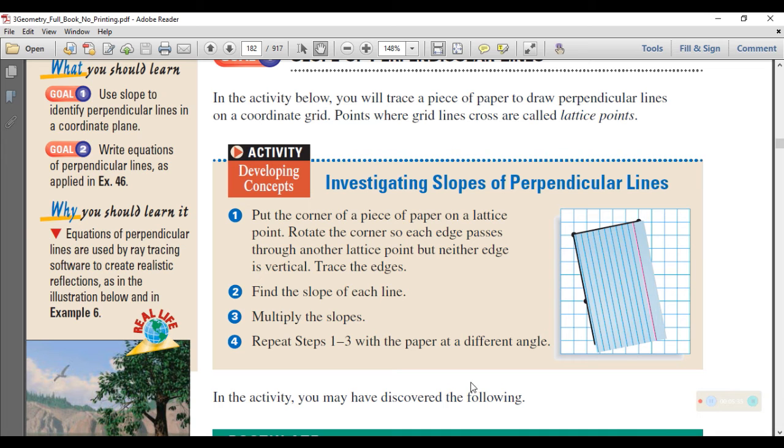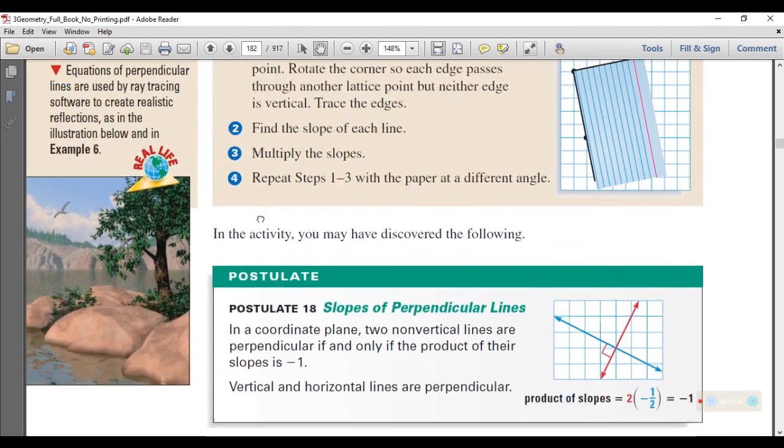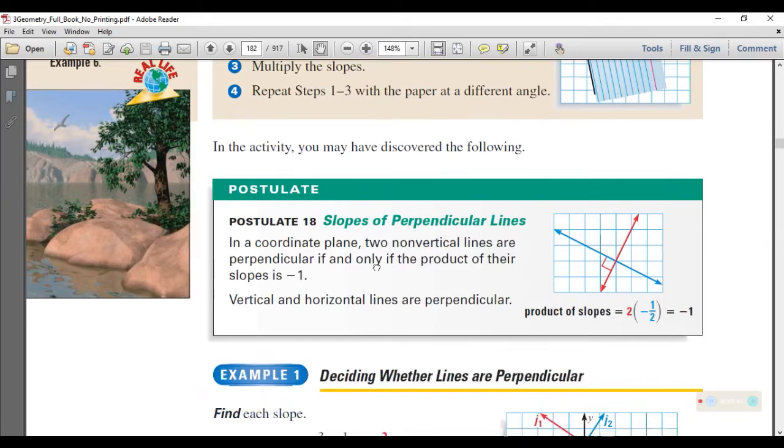So what is the importance of this value, negative 1? What you will eventually discover in the activity is that the slope of perpendicular lines, when multiplied, will give you negative 1. In a coordinate plane, two non-vertical lines are perpendicular if and only if the product of their slopes is negative 1. Vertical and horizontal lines are always perpendicular. For example, if the slope of the red line is 2 and the slope of the blue line is negative 1 half, you will end up with negative 1. That will give you an idea about the relationship of the two lines—they are perpendicular.